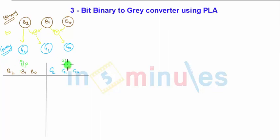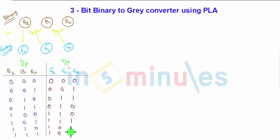Those 8 combinations are starting from 0 0 0 all the way to 1 1 1, and the corresponding outputs will be: G2 is B2 as it is, therefore it will be 0 0 0 0 1 1 1 1. G1 is XOR between these 2, so 0 0 0 0 1 1 1 0 0. And for G0, XOR operation between these 2 gives 0 0 1 1 0 0 1 1 0.